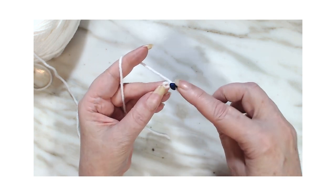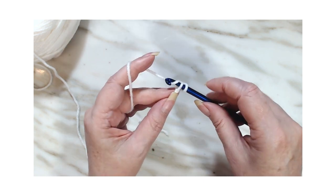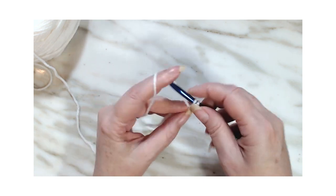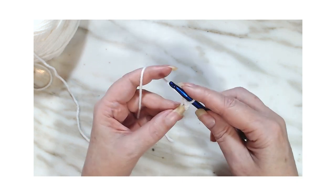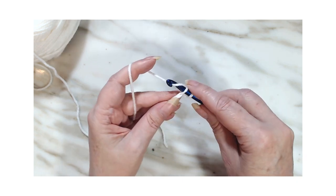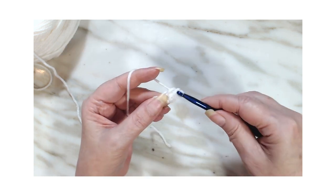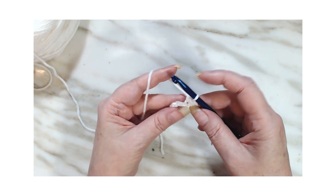So we're going to go into the stitch. Yarn over, pull through. Yarn over, go through two. Go into the stitch. Yarn over, pull through. Yarn over, pull through two. And we're going to do that.